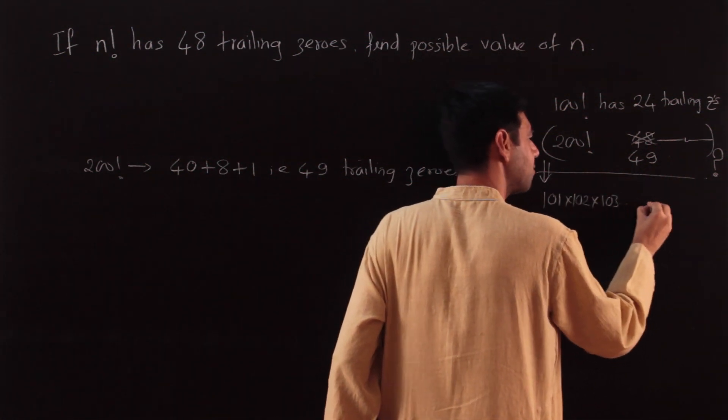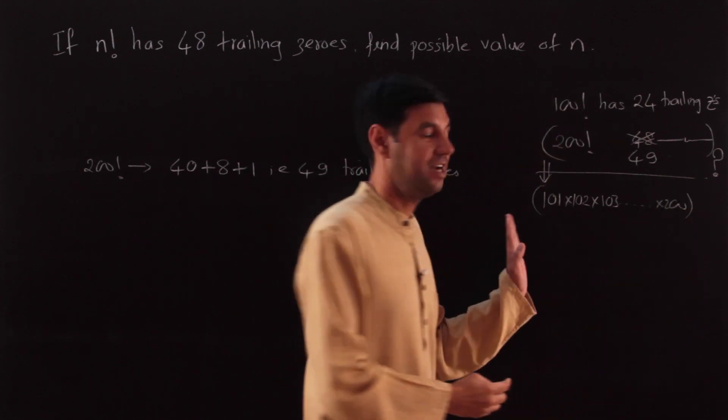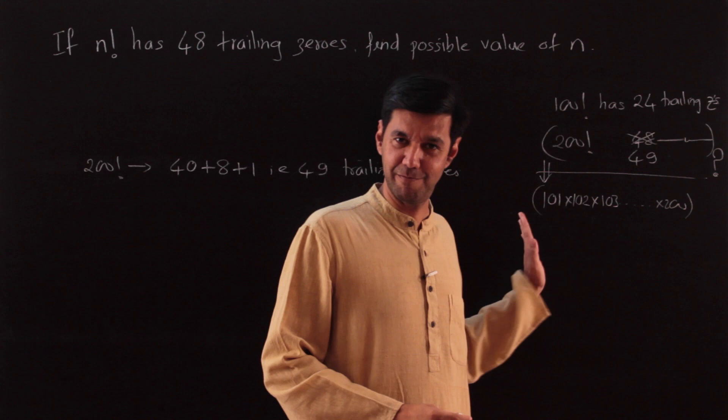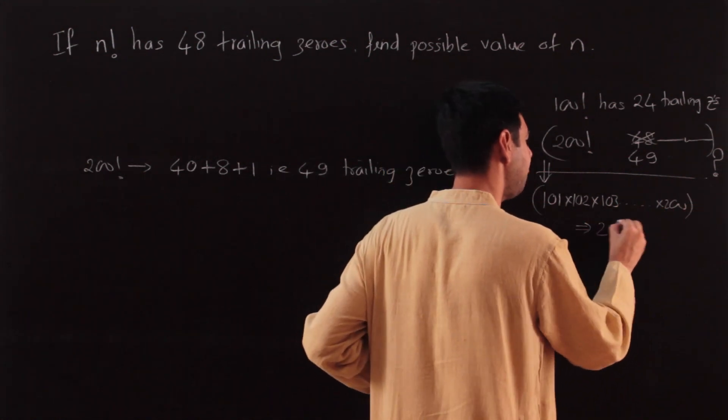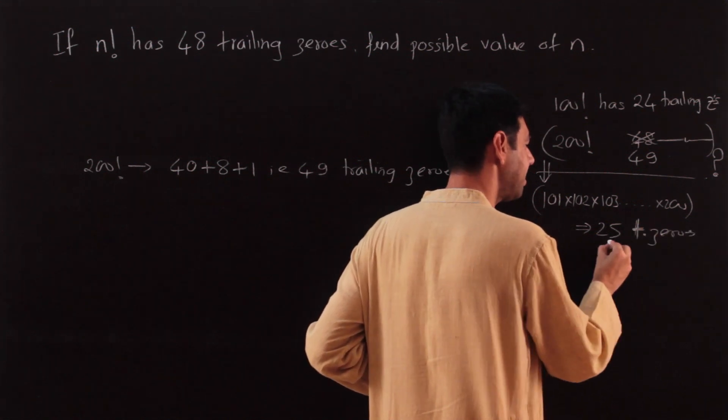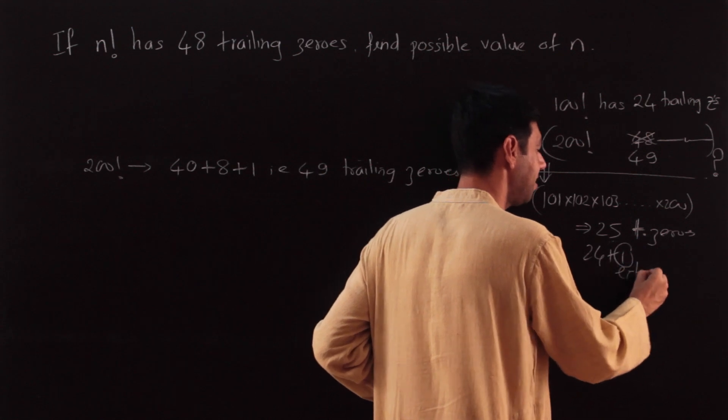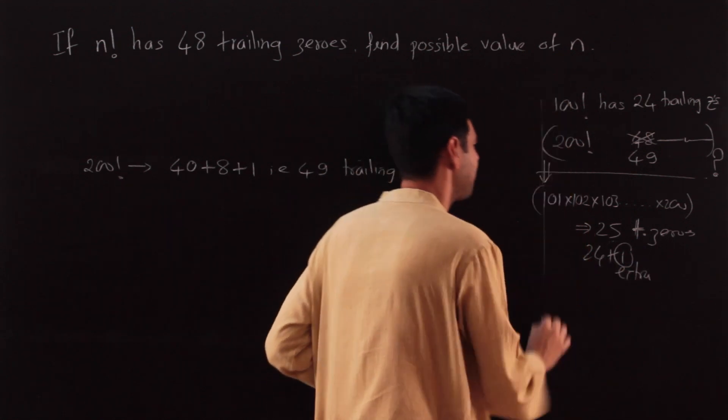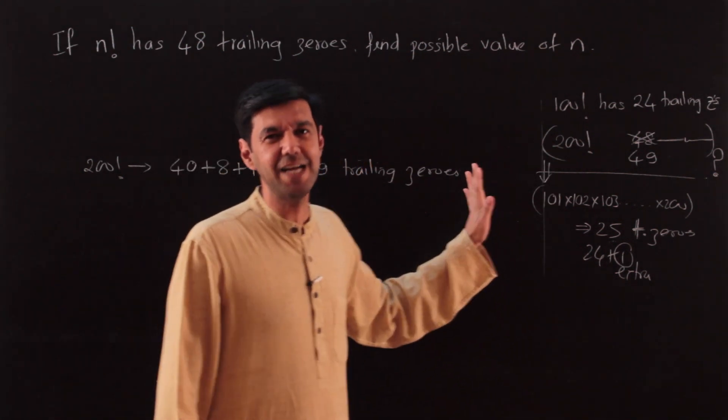So what I am trying to tell you is you should understand: from 101, 102, 103, and so on till 200, this is also a set of 100 natural numbers. When you multiply, this is going to have 25 trailing zeros. So think why do I get that one extra? Why is it that one extra? Which number gives me this one extra?